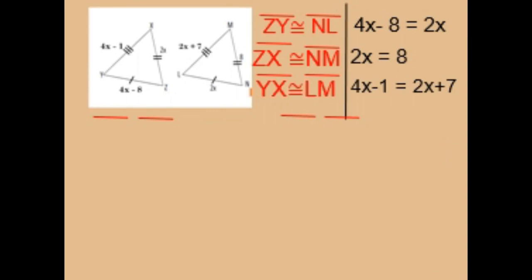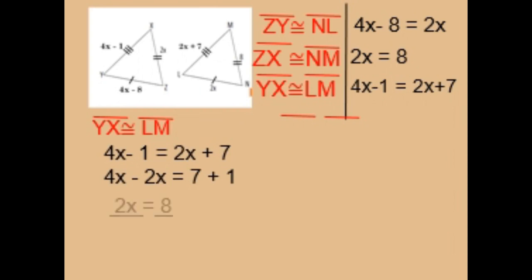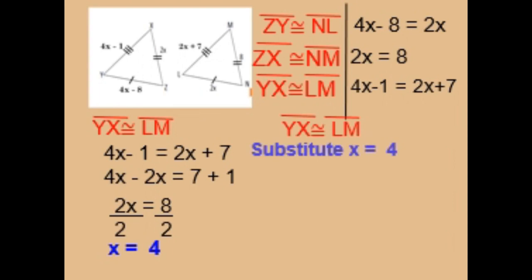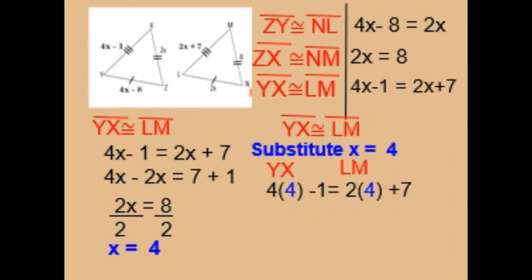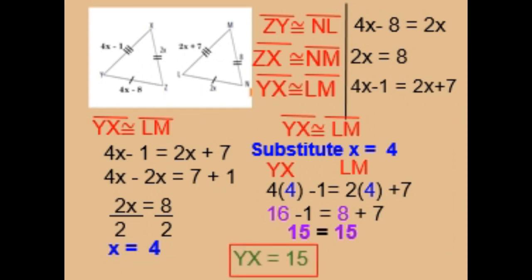For the third corresponding side, side YX is congruent to side LM, or 4x minus 1 equals 2x plus 7. Combining like terms: 4x minus 2x equals 7 plus 1, so 2x equals 8, and x equals 4. Substituting: 4 times 4 minus 1 equals 15, and 2 times 4 plus 7 equals 15. So side YX equals 15 and side LM equals 15.